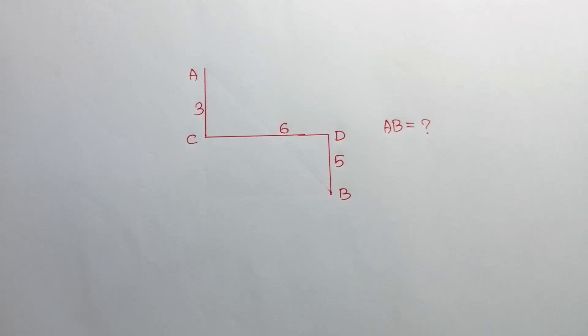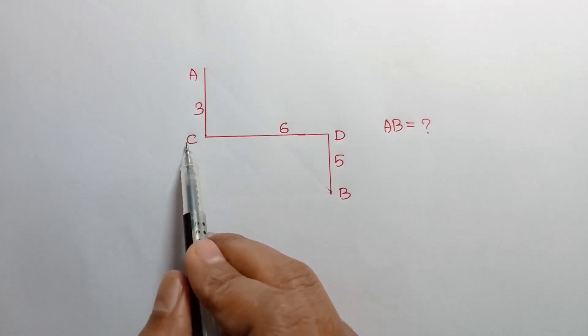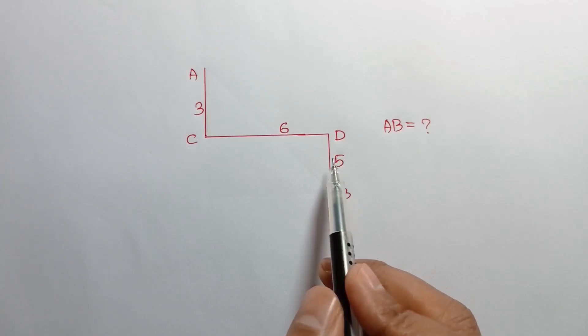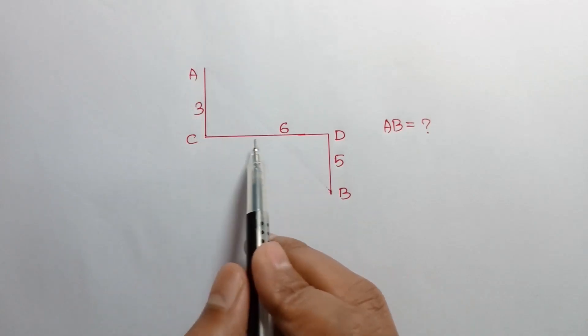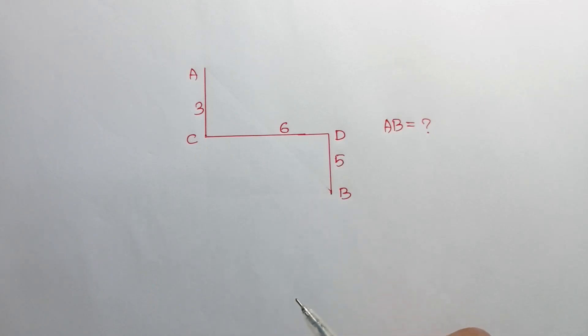Hi everyone. In this video, I am going to show how to find the length of AB, where AC is equal to 3 unit, CD is equal to 6 unit, DB is equal to 5 unit, and angle ACD and angle CDB are right angles.